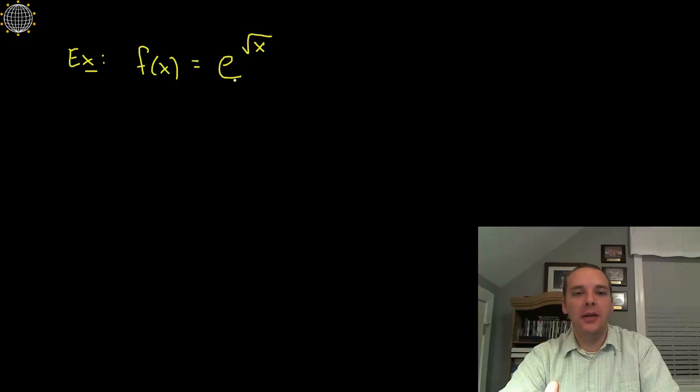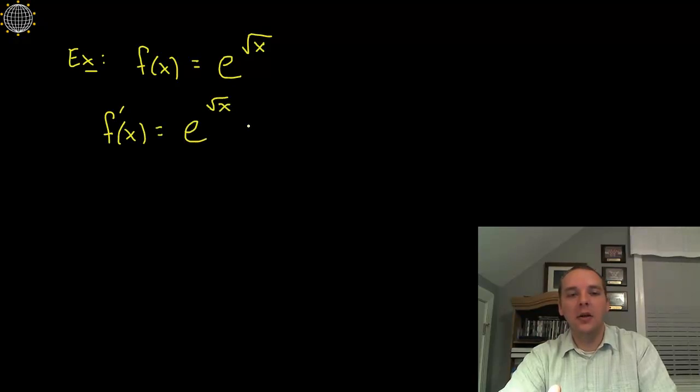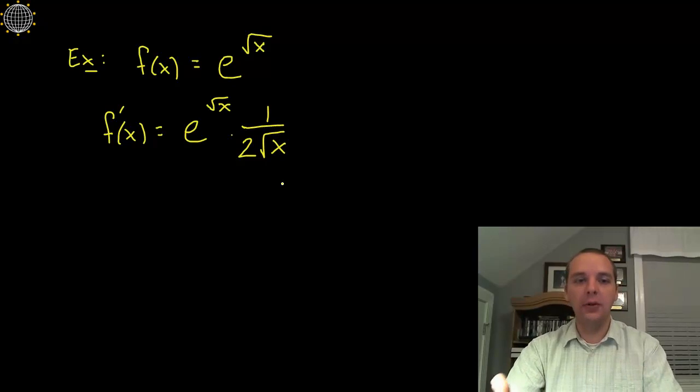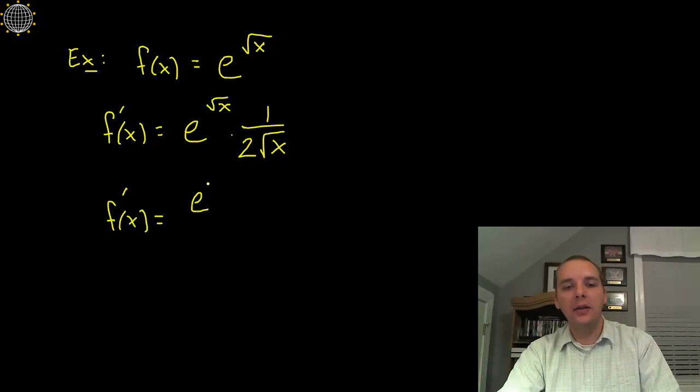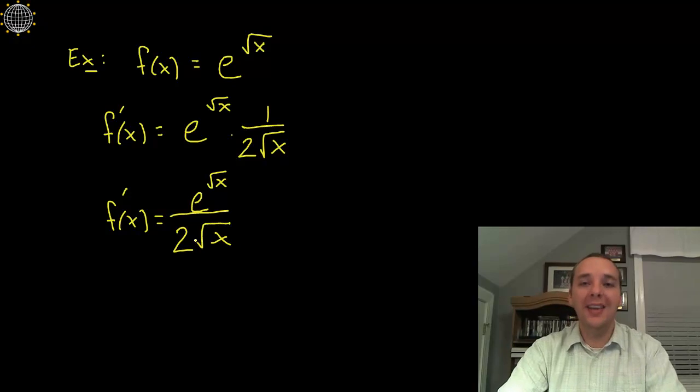All right last example e to the square root of x. So the square root of x is like x to the one half. So the derivative of this function would be e to the square root of x, right? And then on some scratch paper I'm not going to work out all the details, but this derivative of x to the one half would be one half x to the minus one half, which simplifies as one over two root x. And so you'd have to do a little algebra to see that, but just for time's sake I'll just go ahead and simplify that for us. So the final answer, the derivative would be e to the square root of x, divided by two root x, right? So we can take any exponential derivative now in conjunction with the chain rule.